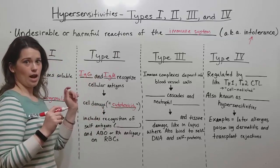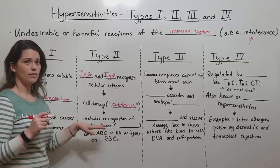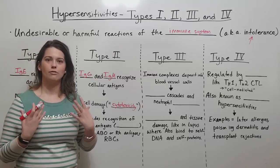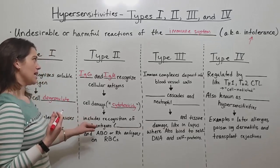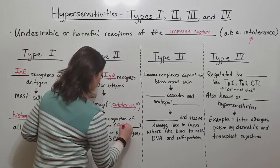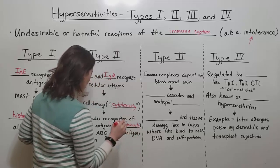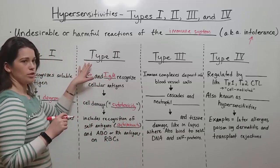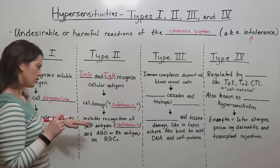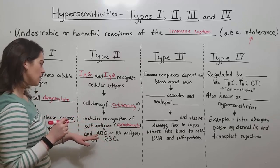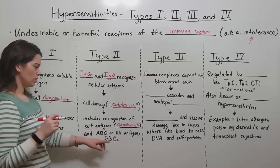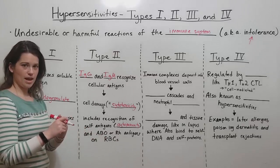Some examples of type 2 hypersensitivities involve the recognition of self-antigens — things that belong to the host and are not foreign — resulting in conditions known as autoimmune disorders or autoimmunity. In type 2, IgG and IgM recognize cellular antigens and cause damage. This can involve self-cells, and in particular red blood cells. The ABO blood groups — type A, type B, type O, type AB — relate to carbohydrates on the surface of red blood cells.